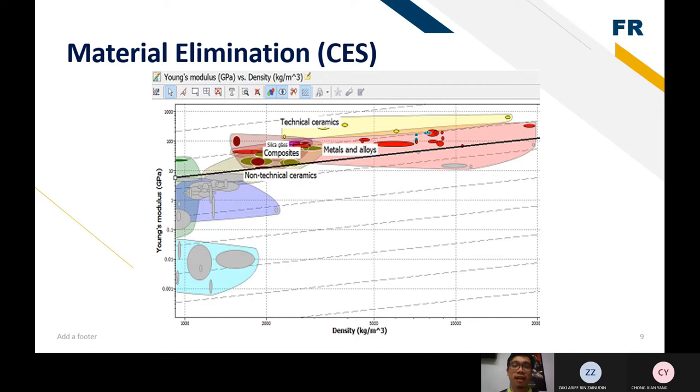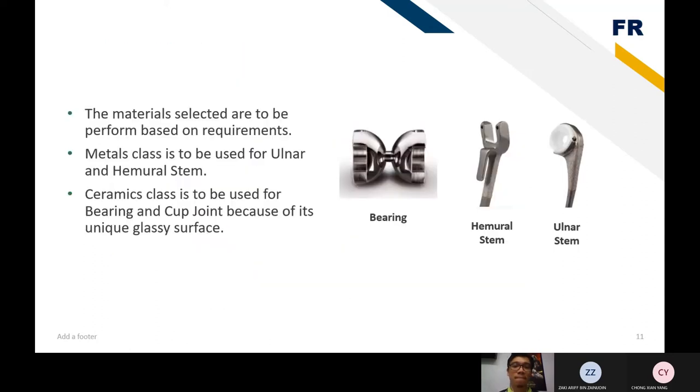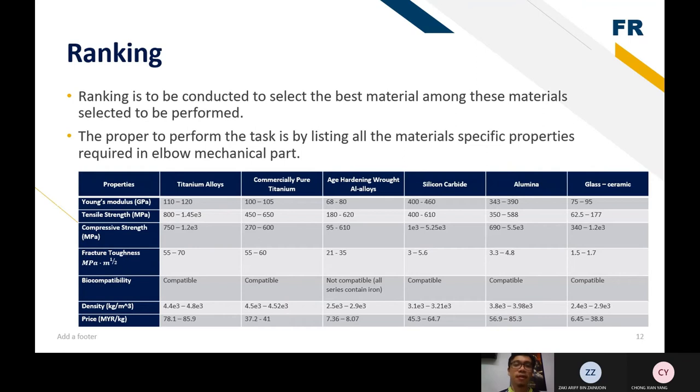So from here, all the materials that are closest to the line are to be performed equally based on the requirement required to produce a surgical implant product. So from this ES, once we already simplified the material, now we want to select among this material that we selected, what is the best material to be performed for the surgical implant.